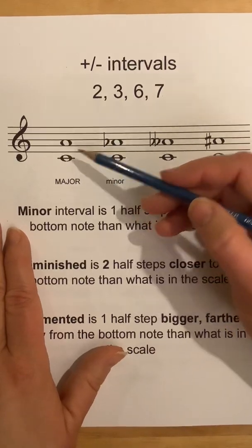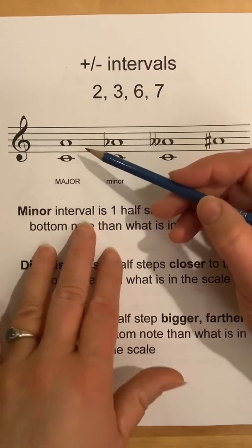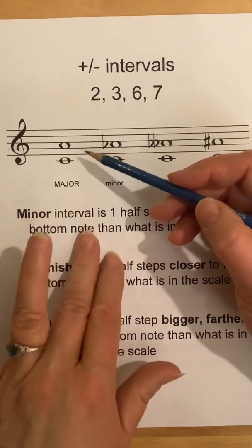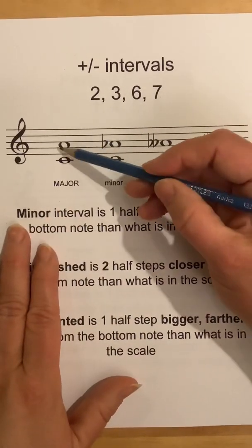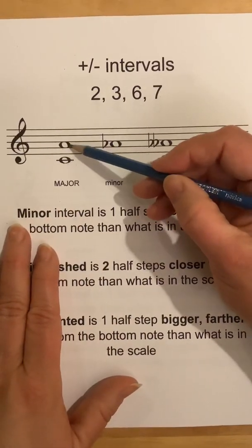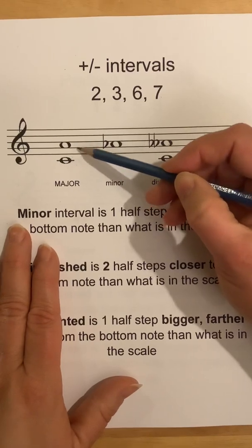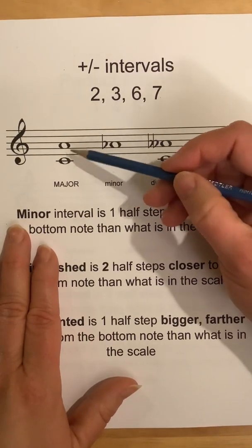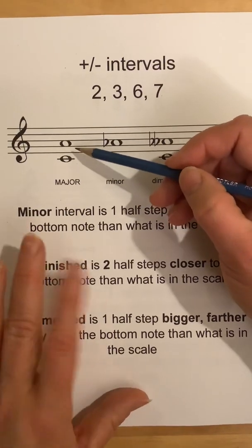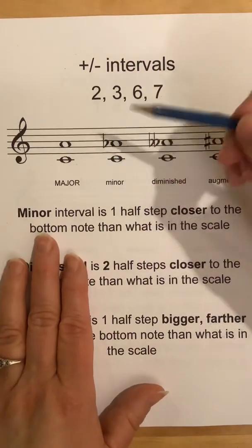I like counting up on my fingers: C, D, E, F, G, A. And there's your A. Or you can count line, space, line, space — 1, 2, 3, 4, 5, 6 — and you still get to A. I think people make less mistakes using their fingers, but whatever works for you, works for you.